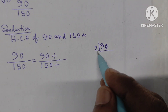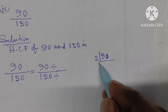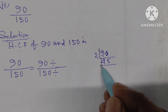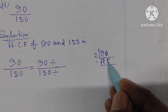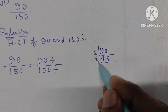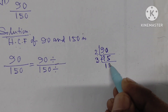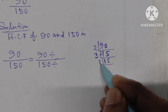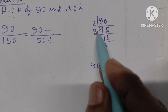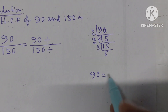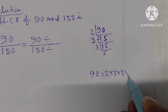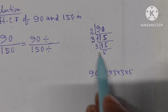Dividing 90 by 2 gives 45. The unit place of 45 is 5, so it is not divisible by 2. Continuing the factorization: 90 equals 2 into 3 into 3 into 5.